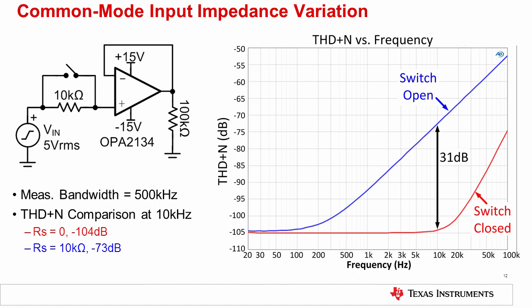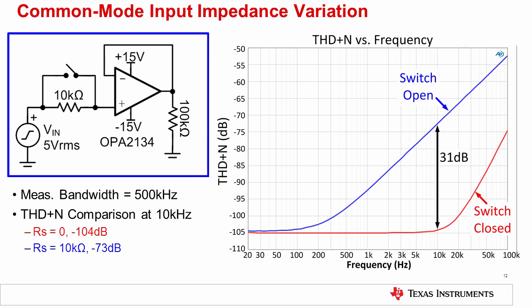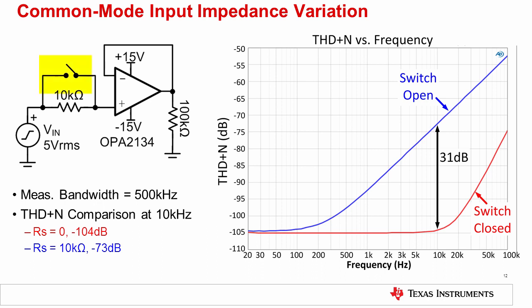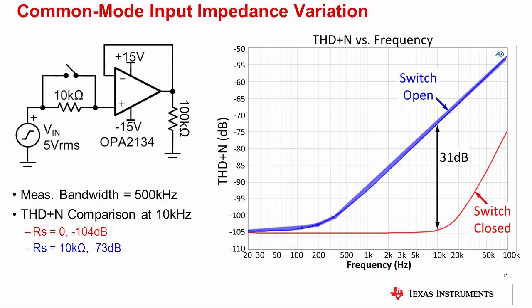Many engineers are familiar with slew rate limitations and input crossover distortion, but distortion due to common mode input impedance variation is often not understood or neglected. The graph on the right shows the dramatic impact of common mode input impedance variation on distortion. The circuit configuration features the OPA2134 in a voltage follower configuration with a 5 volt RMS input signal and a 10 kilohm source impedance. The circuit features a switch which can be opened or closed to show distortion with and without the source impedance. With the source impedance shorted, distortion is very low as seen in the red curve. However, if the switch is opened, the source impedance is 10 kilohms, and the distortion is much worse as seen in the blue curve, which is 31 dB worse at 10 kilohertz.